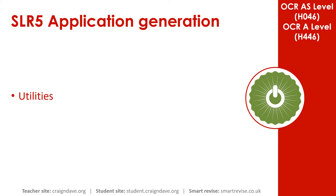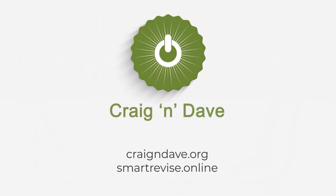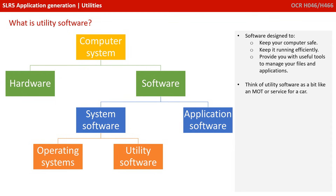In this video we consider utility system software. Utility system software is a sub-category of system software and often sits alongside your operating system. Lots of operating systems come with utility software pre-installed, but you can also buy them from dedicated vendors. Depending on what definition you look at, some people argue about which types qualify, but in essence it is designed to keep your computer safe and running efficiently, and it provides you with useful tools for management of files and applications.